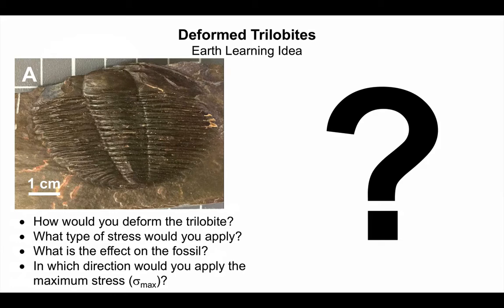Let's look at some fossil material from North Wales. This is the trilobite that's been deformed. It started out looking like the fossil we saw in the previous slide, and it's been changed into this. So how would you deform the trilobite in your Play-Doh so it looked like fossil A? What type of stress would you apply? What effect does that actually have on the fossil? Geologists call the direction of maximum stress sigma max — which direction was this acting on this fossil?